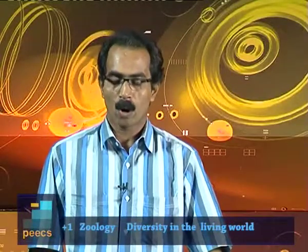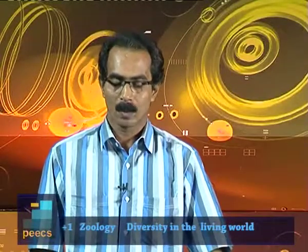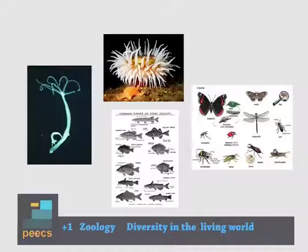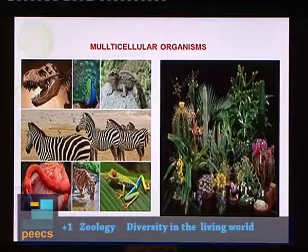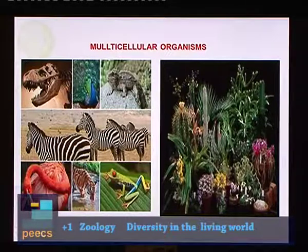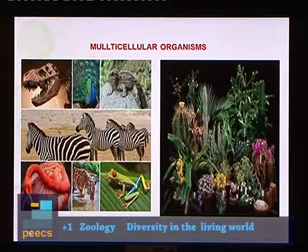There are large numbers of organisms whose bodies carry many cells. Such organisms are called multicellular organisms. We have birds, we have zebras, frogs and plants, etc. These are all multicellular organisms.